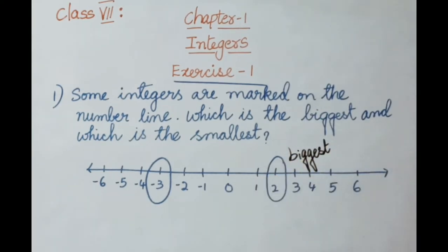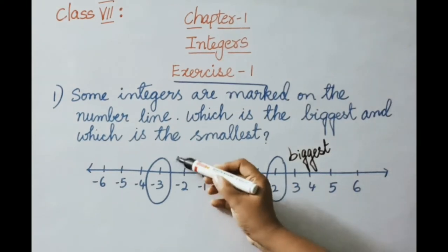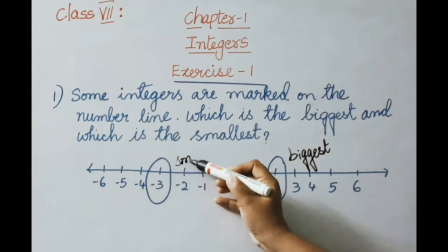And negative numbers are smaller. So, minus 3 is the smallest integer.